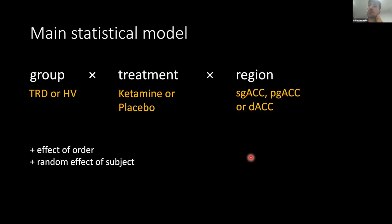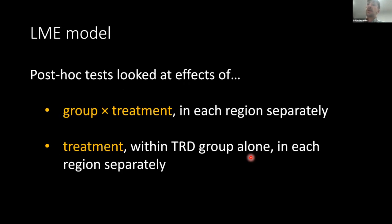The main statistical model examined a group-by-treatment-by-region interaction: group being depressed or healthy volunteers, treatment being ketamine or placebo, and region having three levels — subgenual, perigenual, or dorsal. There was also an effect of order — either ketamine first or second — and a random effect of subjects. We then did post-hoc tests to look at the group-by-treatment interaction within each ROI separately, and also examined the effect of ketamine versus placebo within the depressed group alone in each region, specifically to correlate with symptom scores.